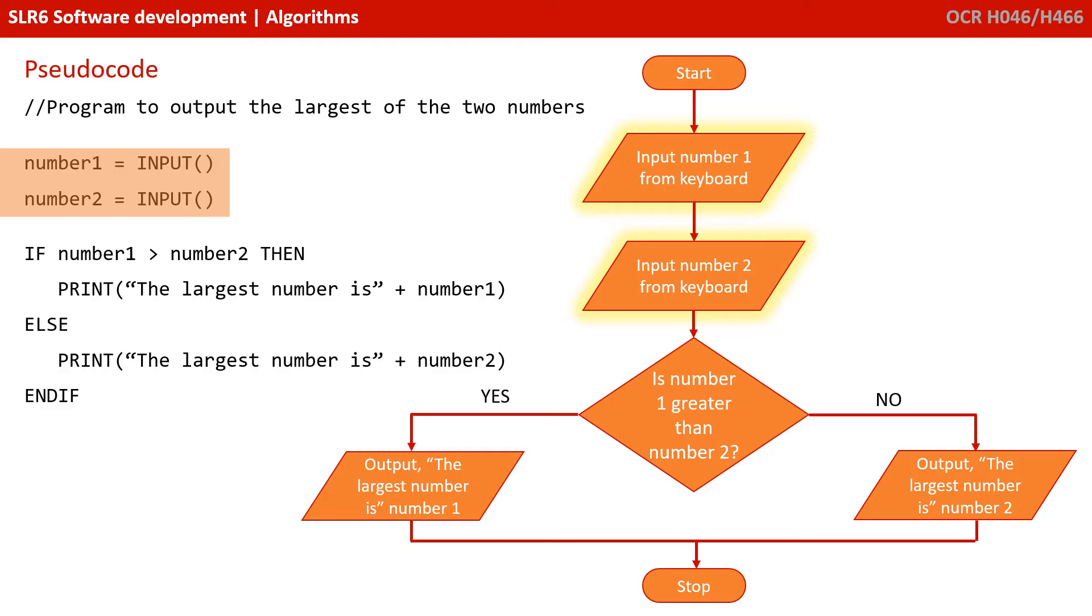So, in this example, we're inputting our two numbers. And we're saying, if number 1 is greater than number 2, then print the largest number is number 1. Otherwise, print the largest number is number 2. And then end.